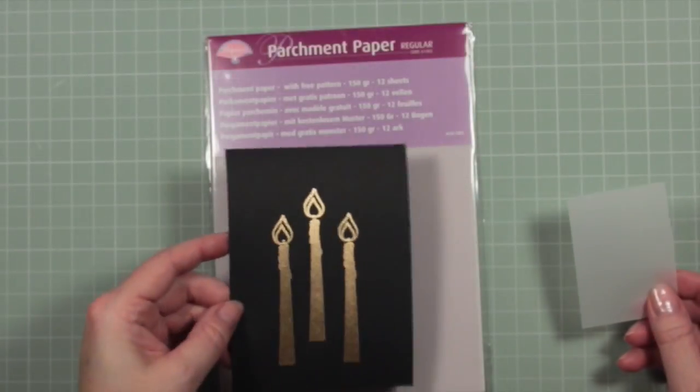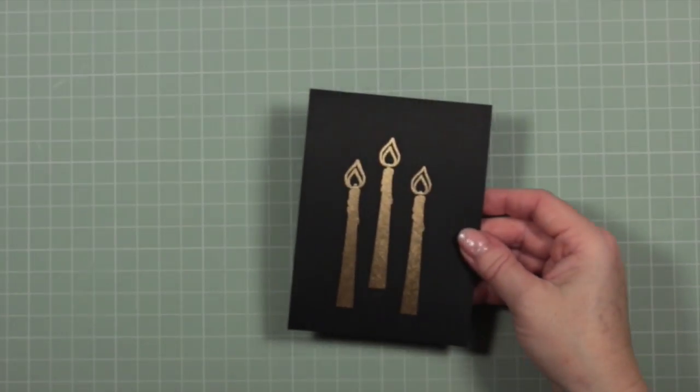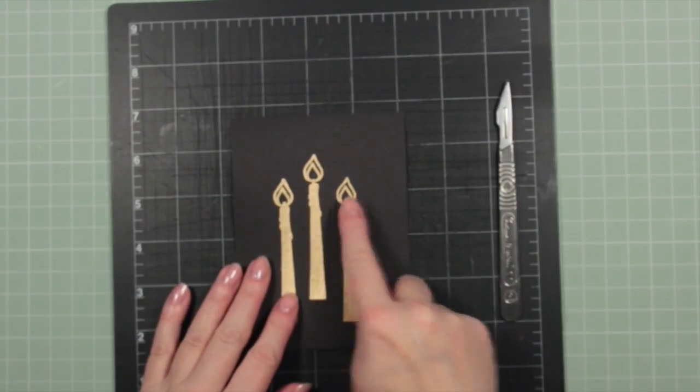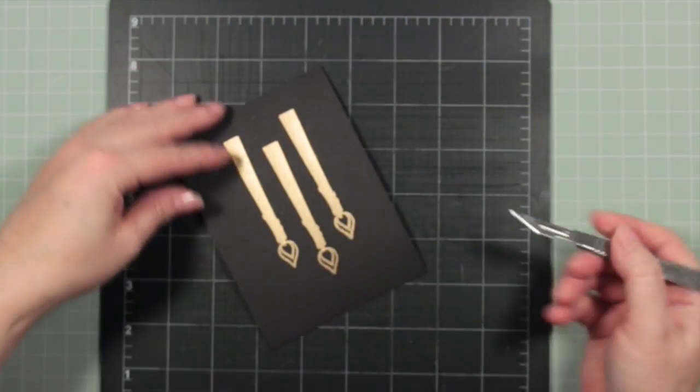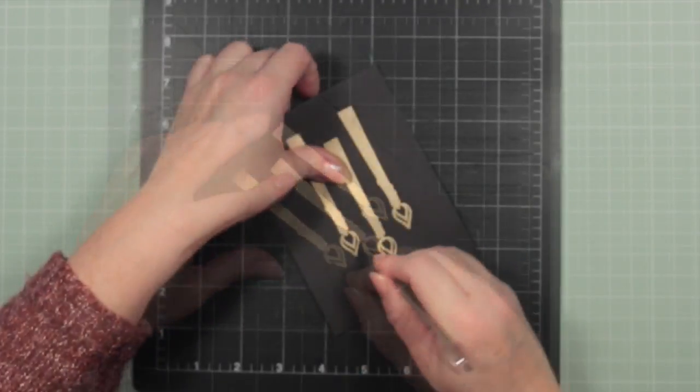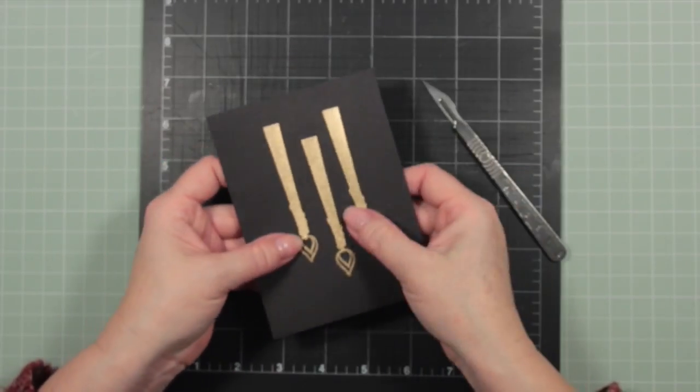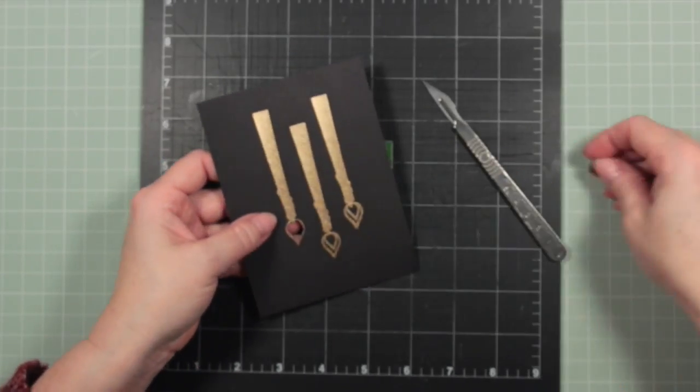I have some parchment paper and I've cut this so that it will fit behind just the tops of my candles just behind the flames. I'm going to use my cutting board and my scalpel to cut out those flames just on the inside of the gold line. I want to try and keep the gold line as an outside line if I possibly can.